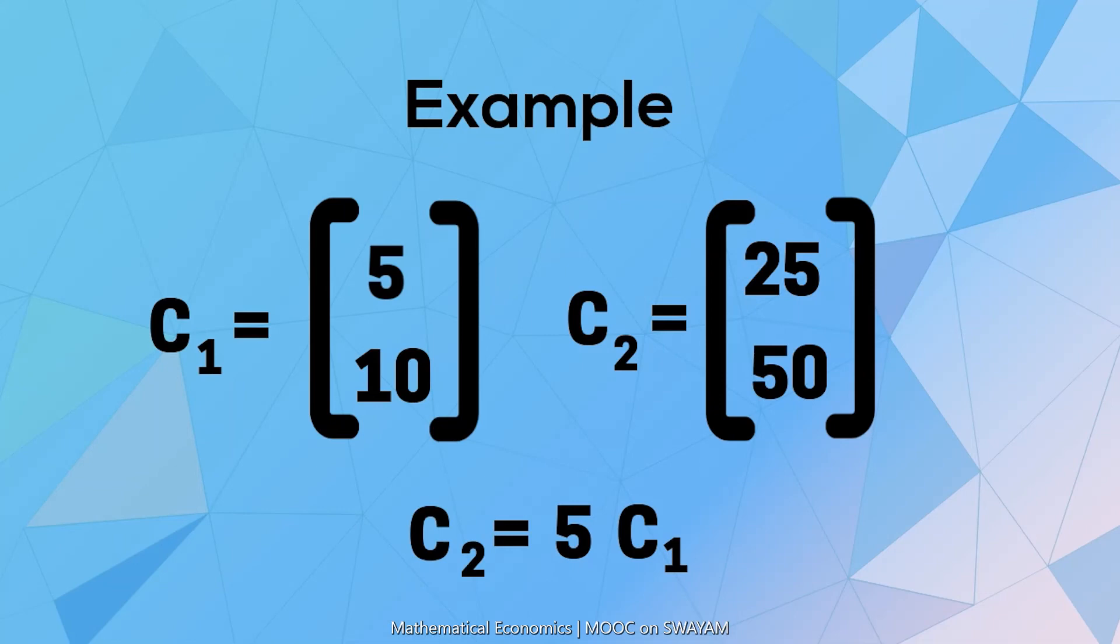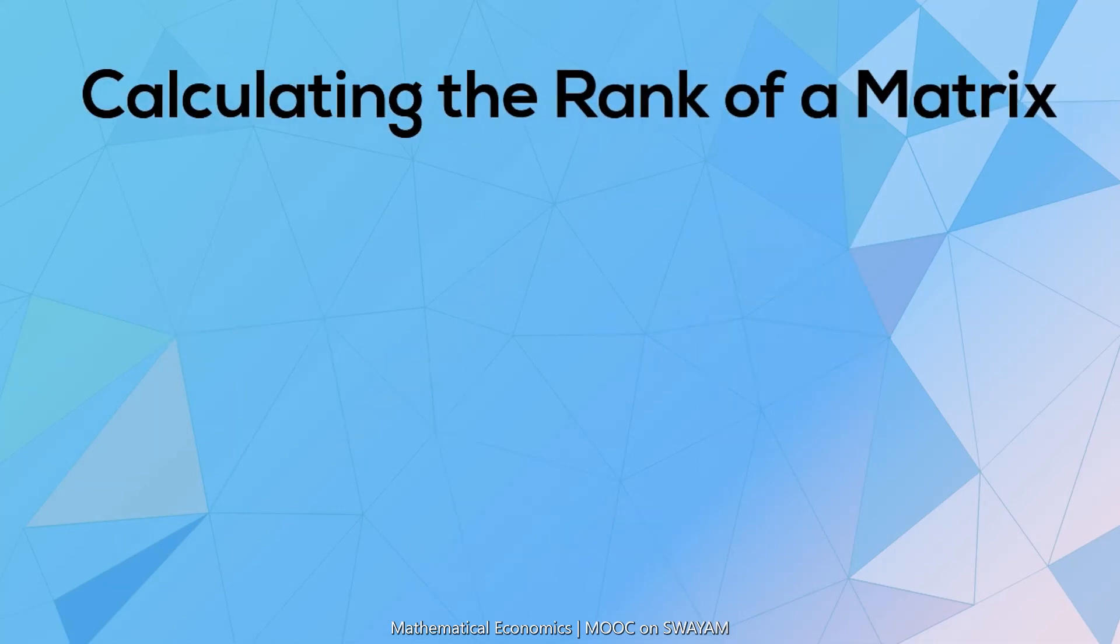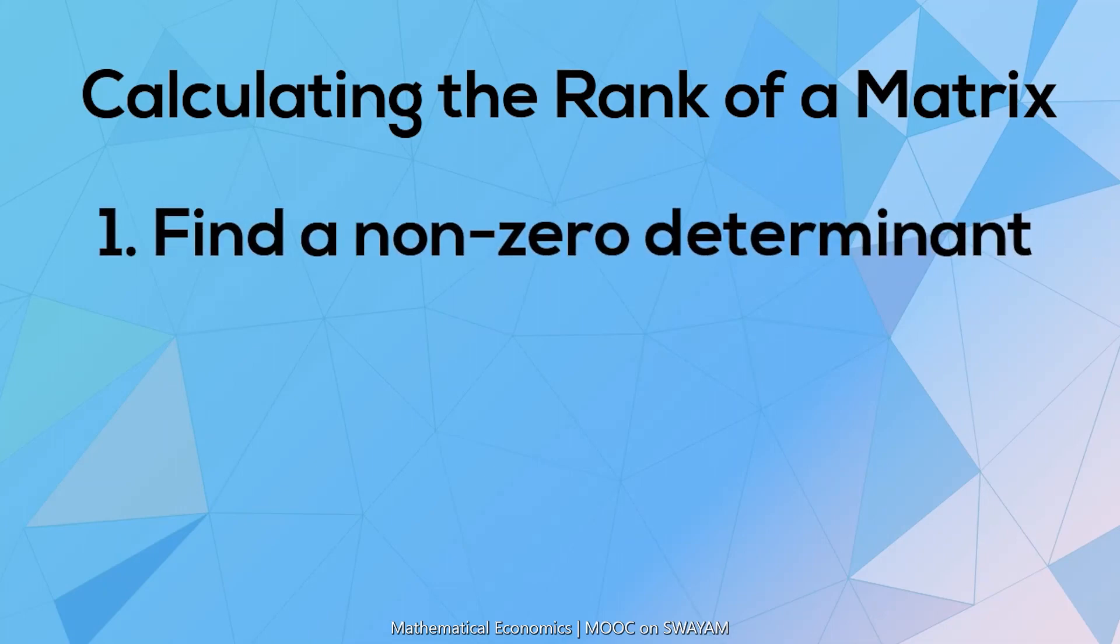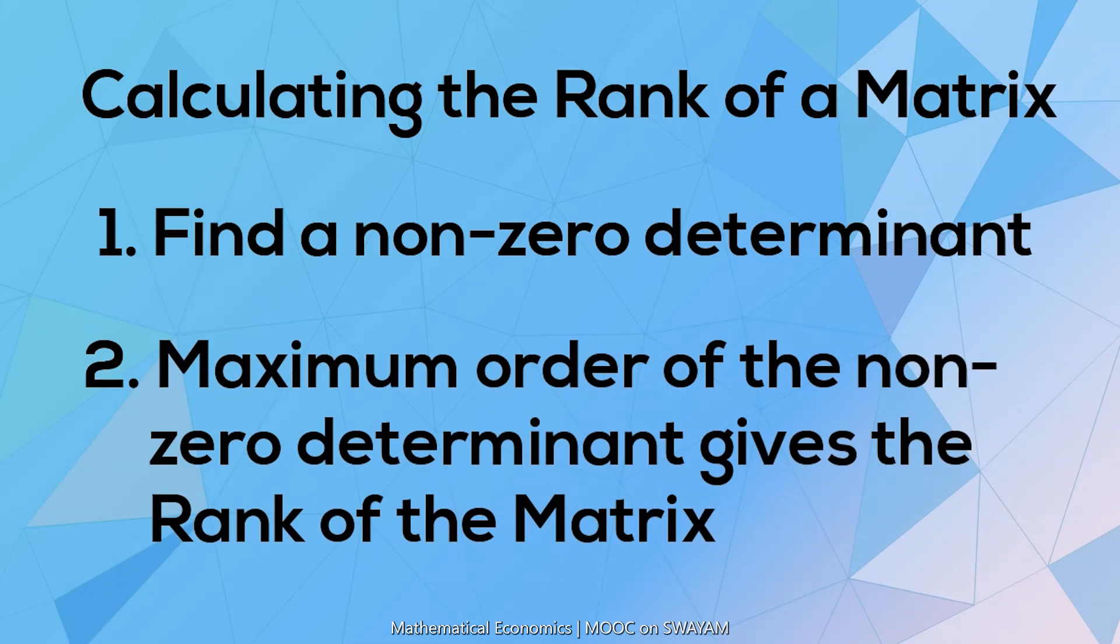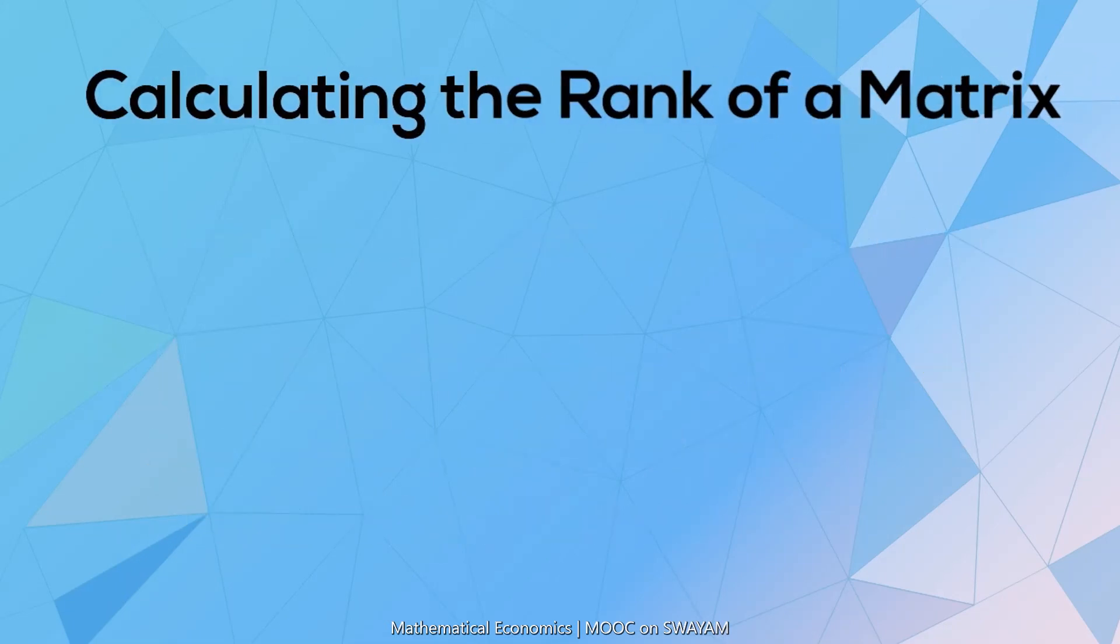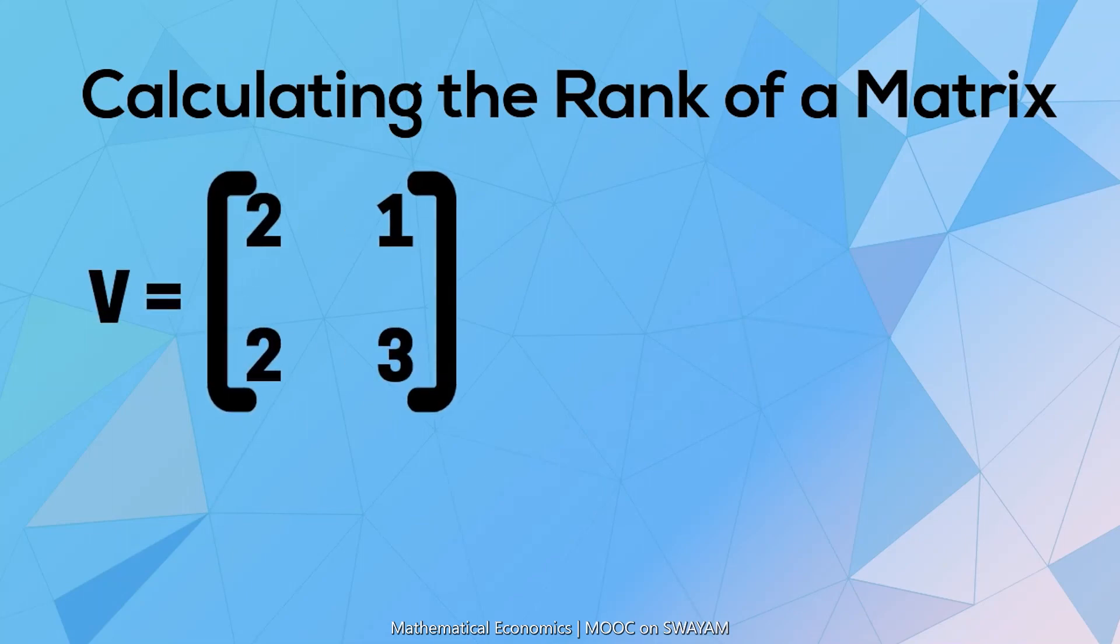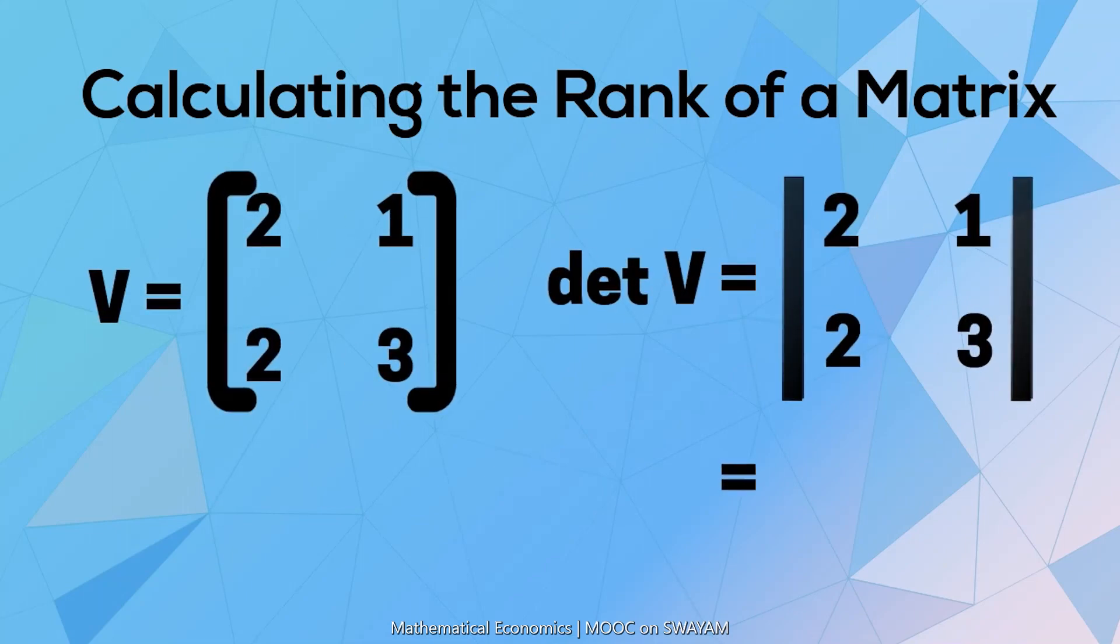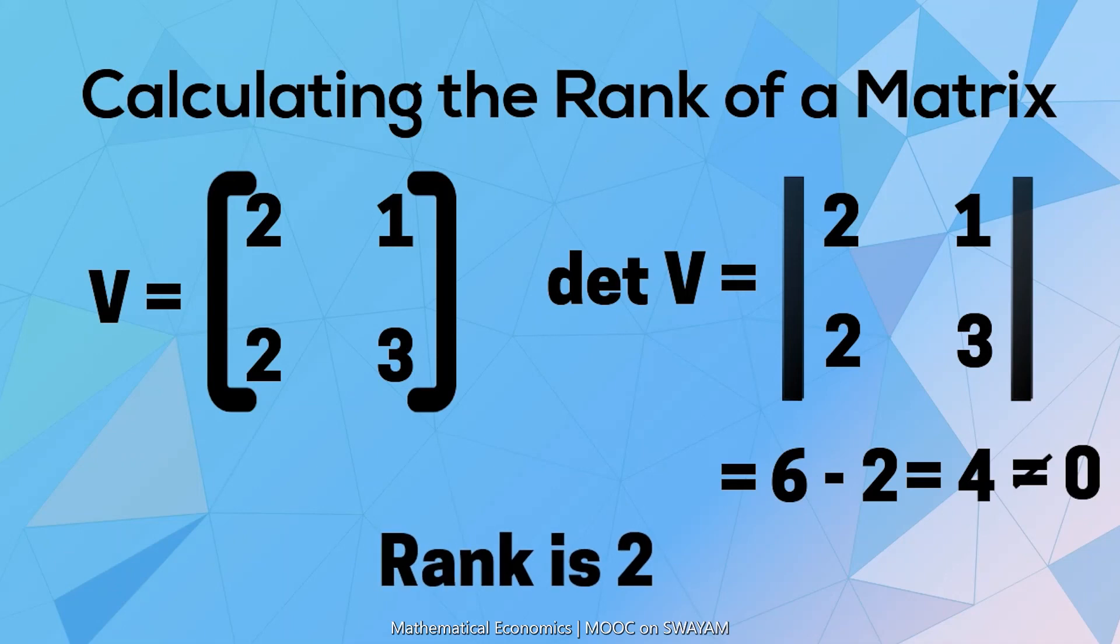The rank of a matrix may be calculated by finding a non-zero determinant. The maximum order of a non-zero determinant gives the rank of the matrix. For the 2 by 2 matrix V, the determinant of V is equal to 6 minus 2 is equal to 4 that is not equal to 0. Therefore, rank is equal to the order of the matrix and that is 2.